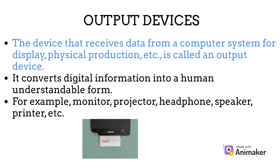The device that receives data from a computer system for display or physical production is called an output device. It converts digital information into a human-understandable form. For example, monitor, projector, headphone, speaker, printer.